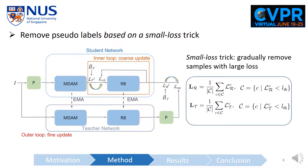We mentioned that we remove noisy pseudo labels in both the coarse and the fine update. The question is how we select the noisy pseudo samples. We use a small loss trick here to gradually remove samples whose loss is larger than a threshold, and this threshold decreases during training.